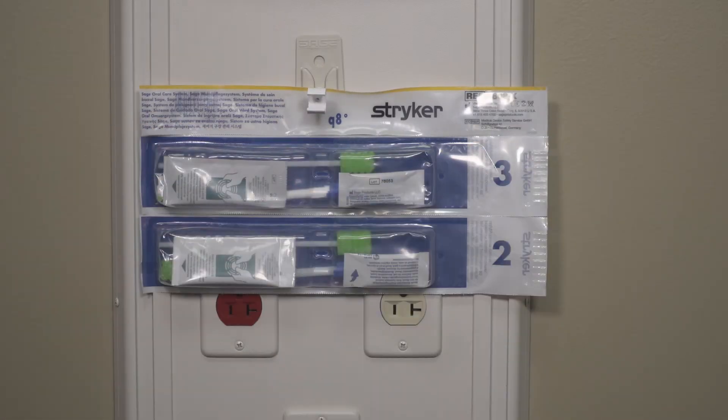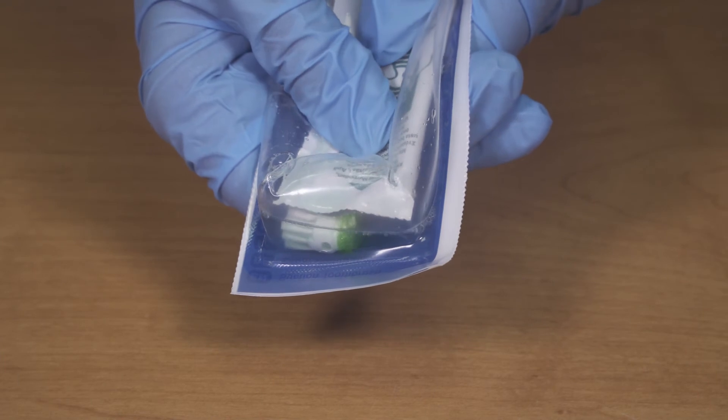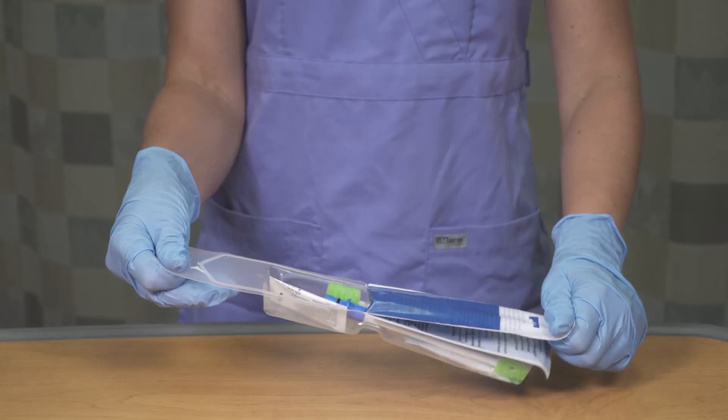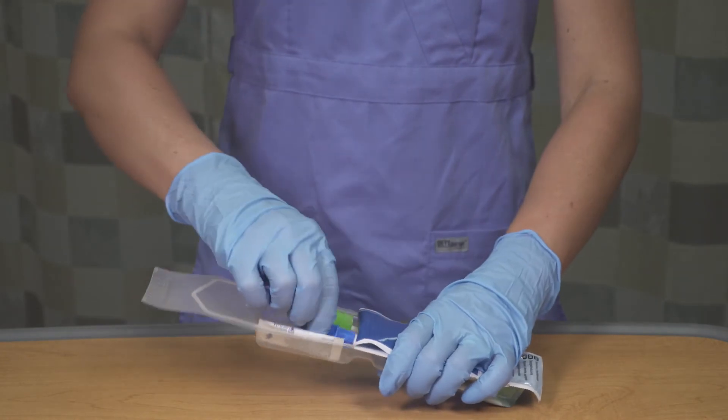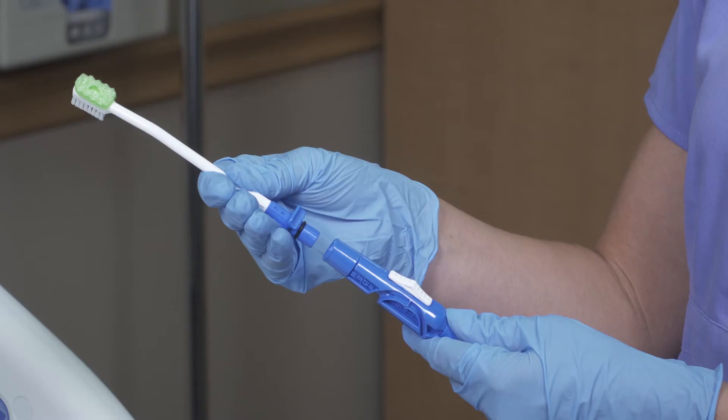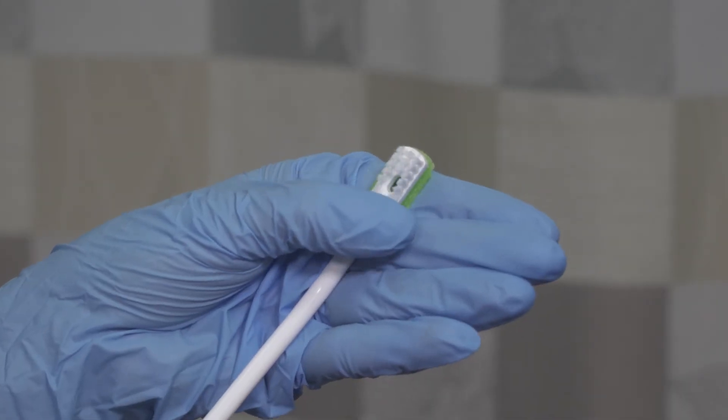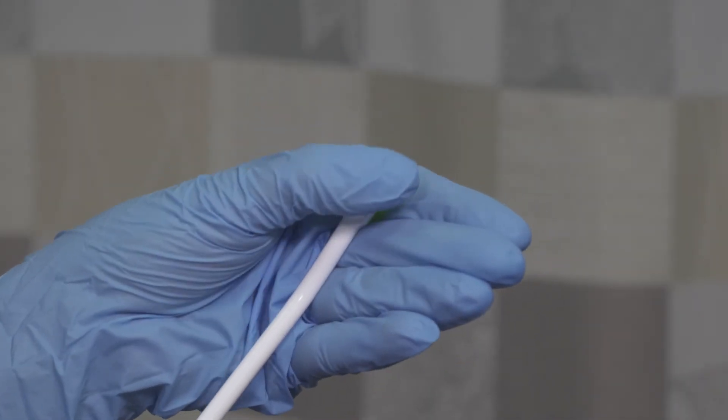Remove step one. Use your thumbs to burst the solution packet. This will release the alcohol free mouthwash. Peel the lid to open the package. Remove the suction toothbrush and attach it to the suction line. The soft bristles of the suction toothbrush help remove dental plaque.